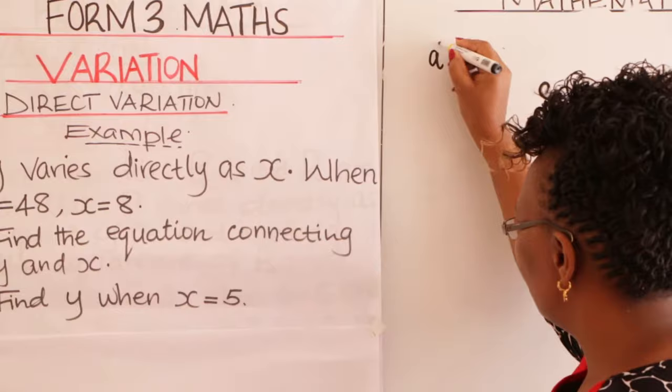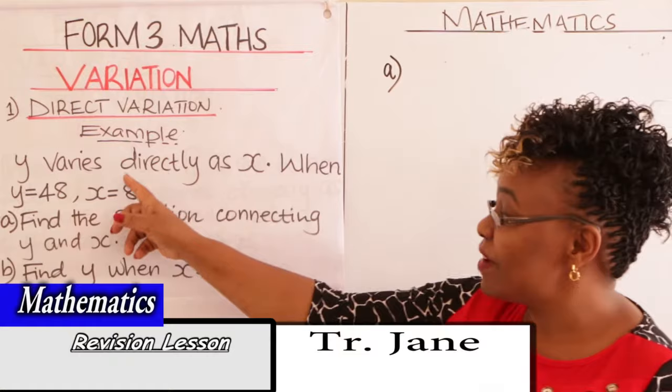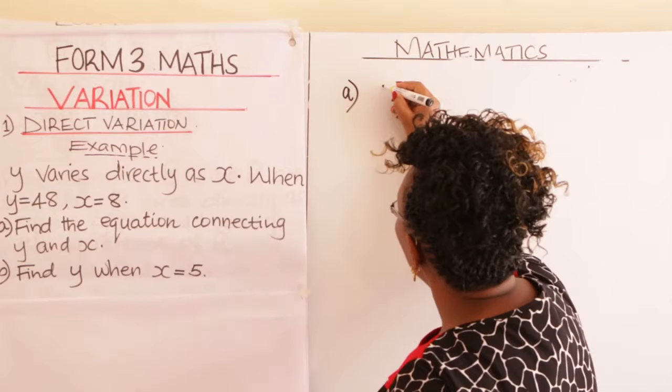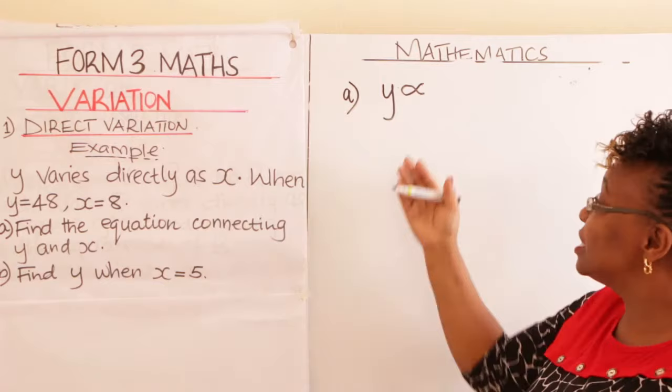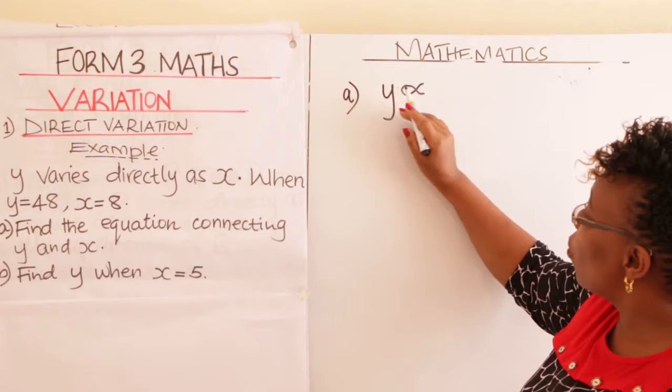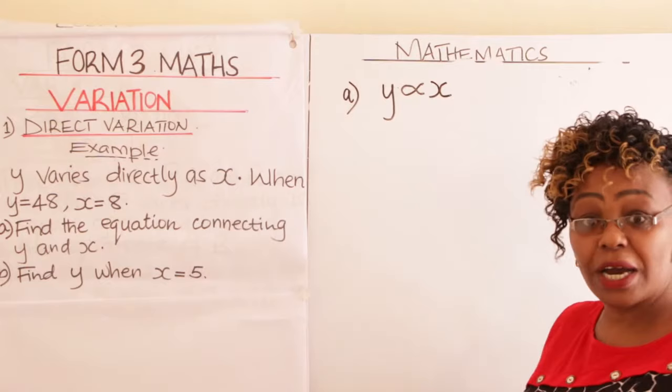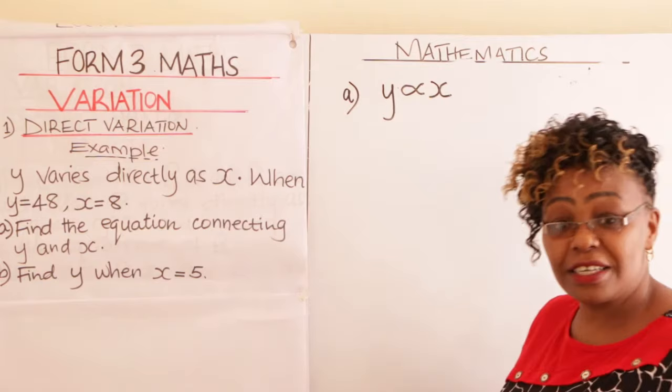You start with the first sentence: Y varies directly as X. How do you write that in short? You put a proportionality sign here — you call it a proportionality sign — to show that they are varying, they are changing. So Y proportionality sign, then you write your X on the other side.